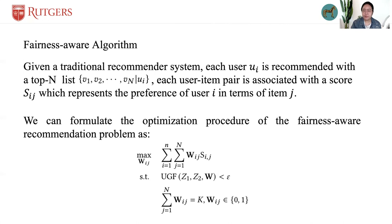The optimization problem here can be solved as an integer programming problem. We can find feasible solutions in this NP-complete problem through faster heuristics. After obtaining the item set which is recommended under the fairness constraint, we rank the k items by their original preference score to construct the final recommendation list.